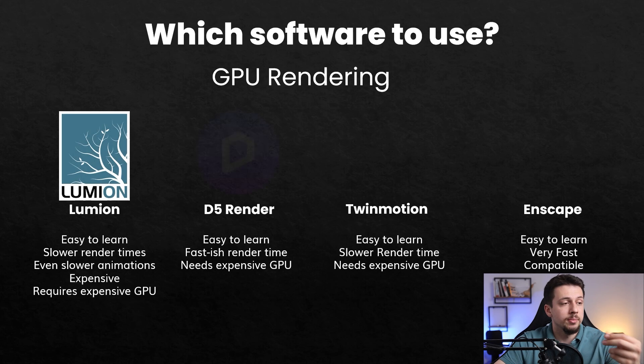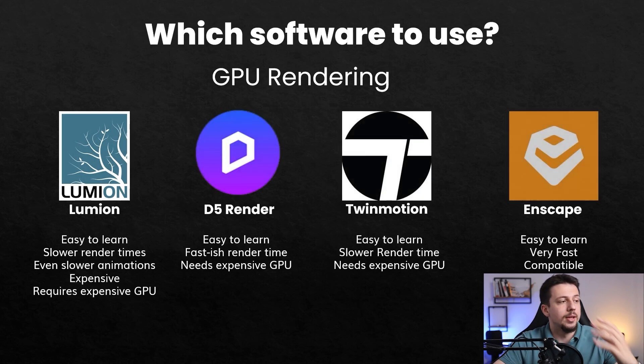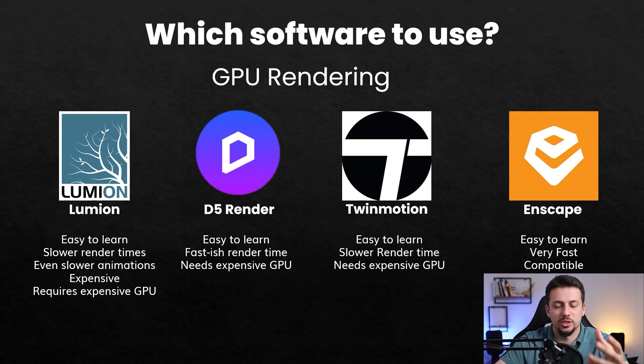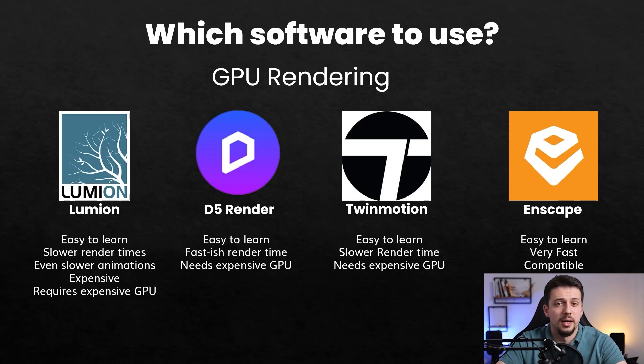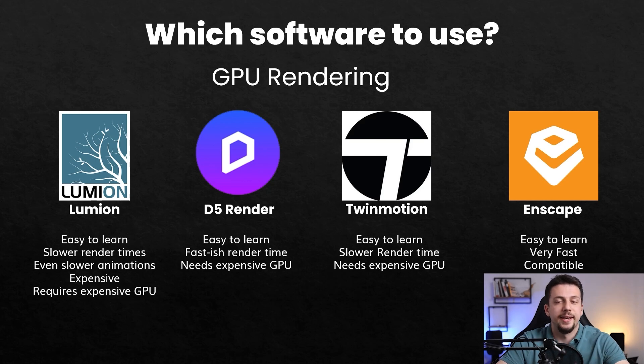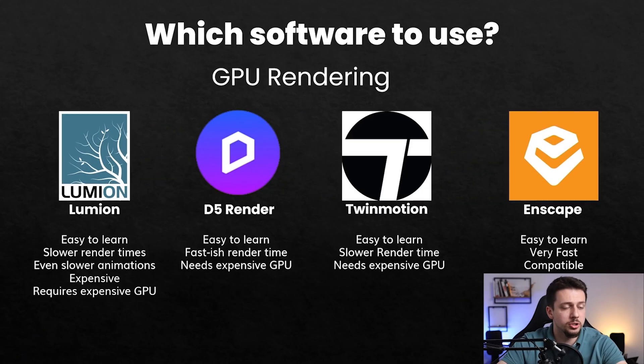As far as GPU rendering software go, Lumion is easy to learn but has slower render times and even slower animations — it can take days to render a 30-second animation sometimes. It is also expensive software and requires an expensive GPU. D5 Render is easy to learn and has faster render times than Lumion, but also needs an expensive GPU. Twinmotion is very easy to learn but has slower render times and also needs an expensive GPU.